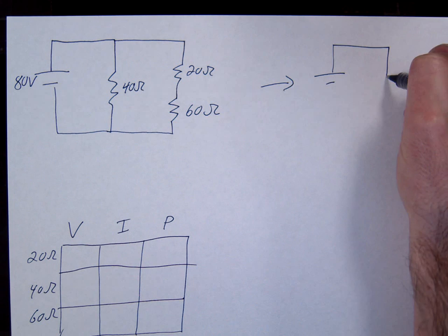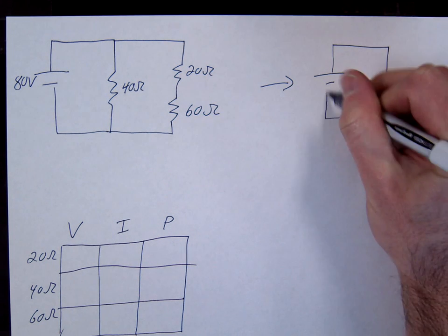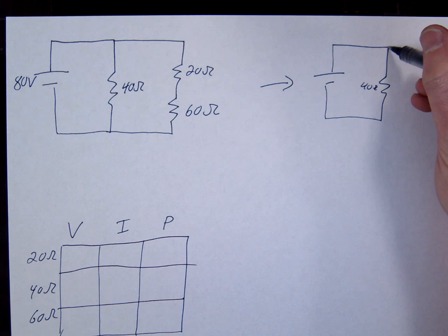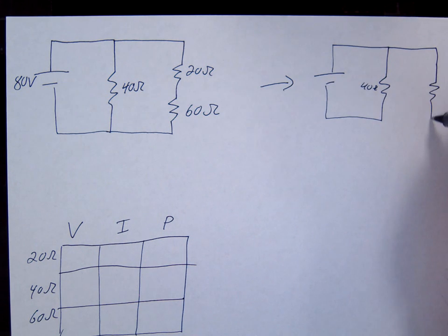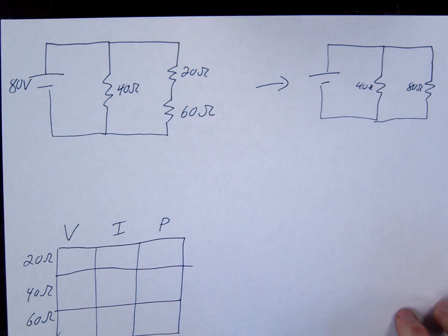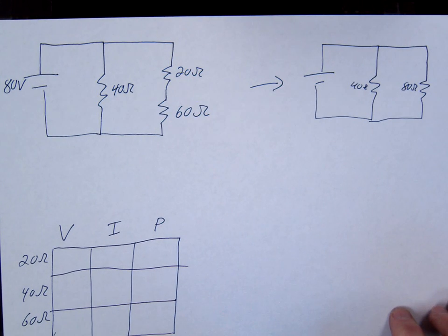We'll leave the 40 alone so that this is still 40. And we are going to fix the 20 and the 60. Those are in series. So what do we do? Add them up. So we're going to add those up and we get 20 plus 60 equals 80. So that's going to be 80 ohms there when we add them up.